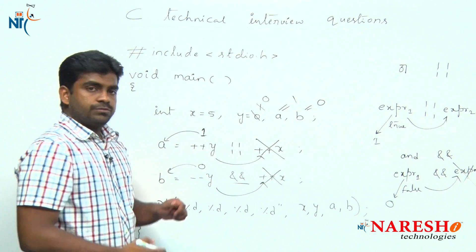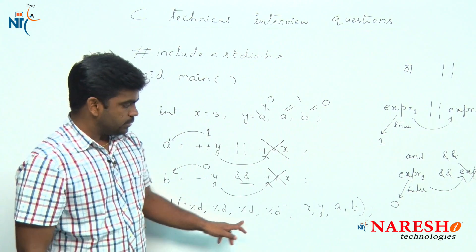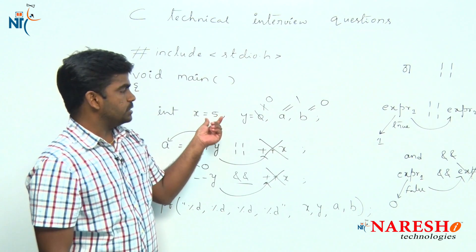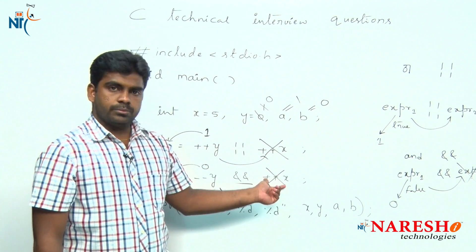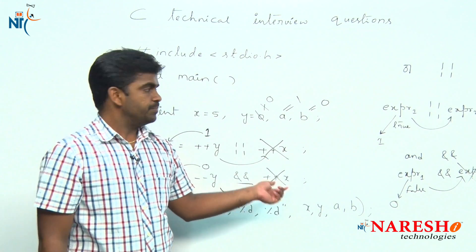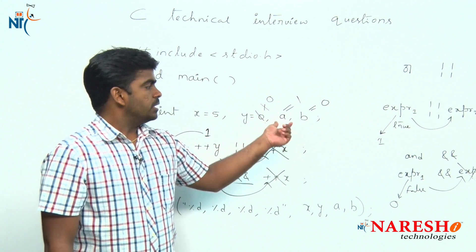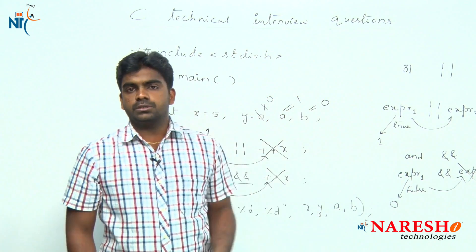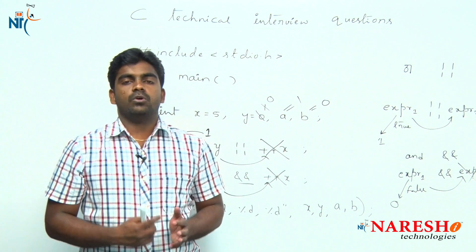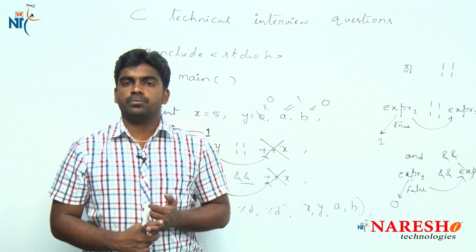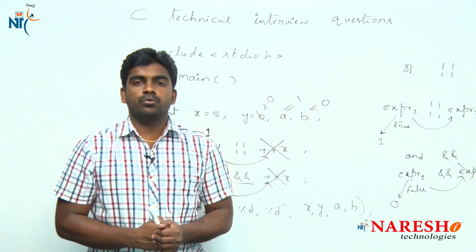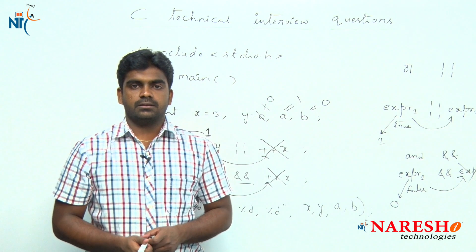After evaluation, if you print x, y, a, b: x value is 5, because the control never reached ++x to modify it. y value is 0, a value is 1, and b value is 0. These are the output values of this program. This is how logical operators and modify operators execute in expressions. Hope you understood — for more videos please subscribe to the Nourish IT channel, thank you.